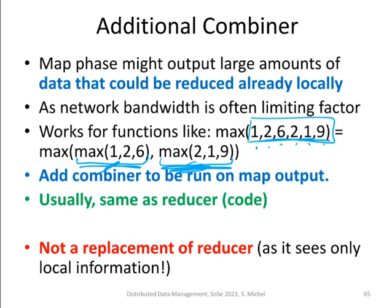The combiner is not a replacement for the reducer — it is only a way to limit the amount of data sent over the network. The combiner is attached to the map task and only sees local information, so it cannot make decisions requiring global information. For example, outputting only terms with a word count greater than 500 can only be decided at the reducer, which knows the full global word count — this cannot be done at the individual map processes.